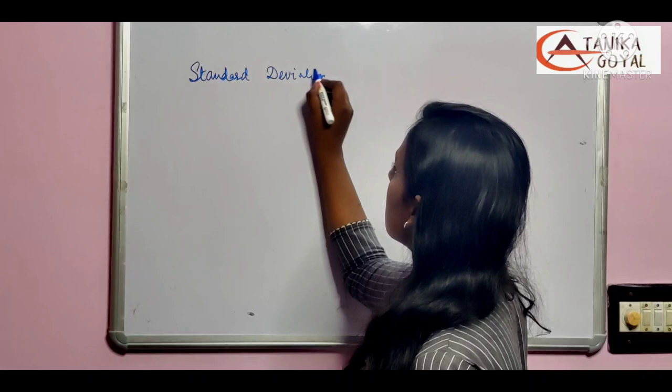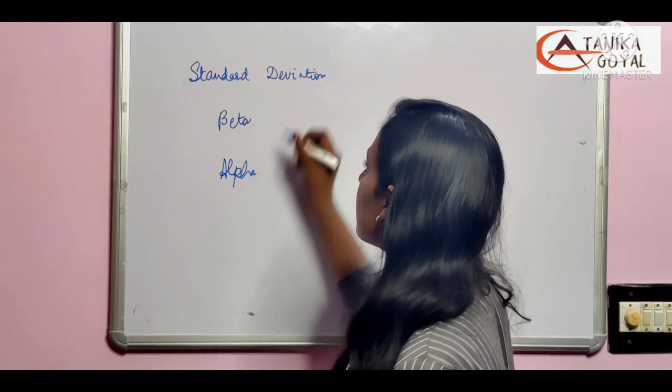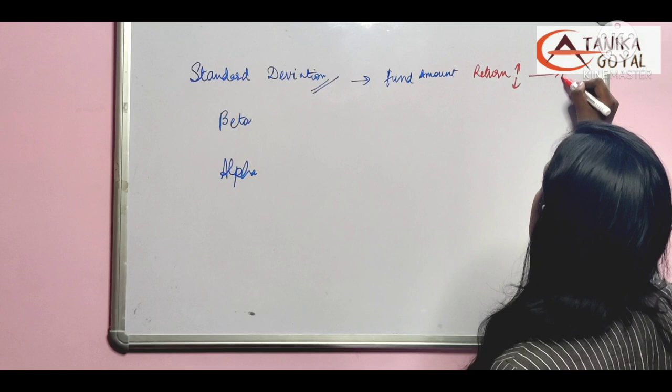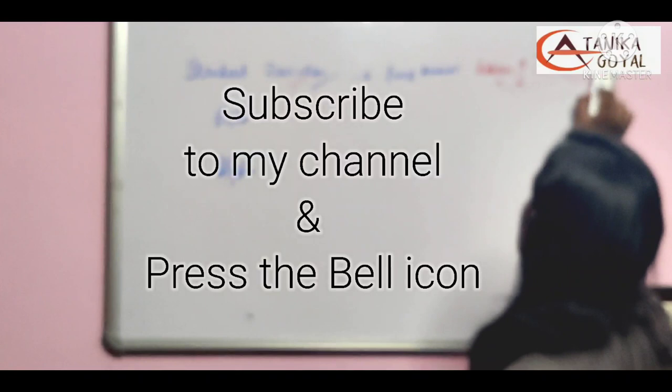And third is alpha. Standard deviation is the value of the fund amount by which returns may go up or down in correlation with its mean. It measures movement, that is, how much movement is up and down in one thing.